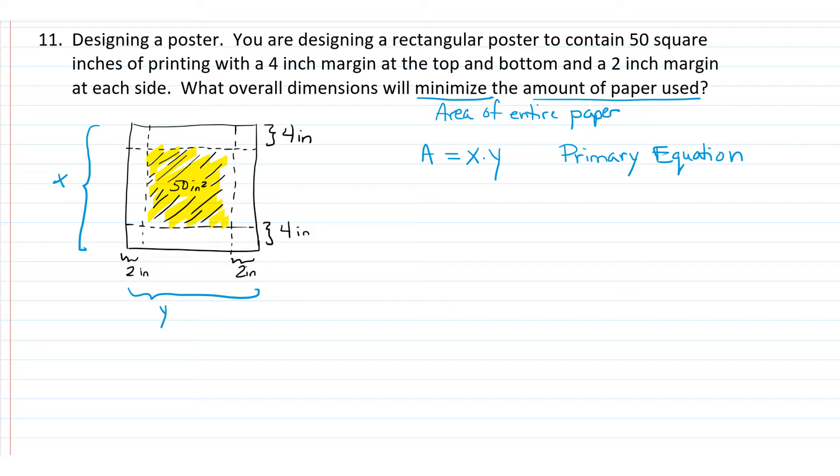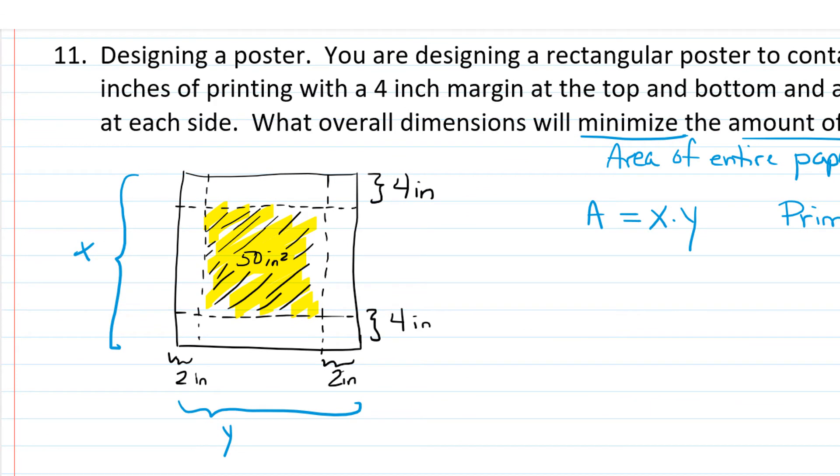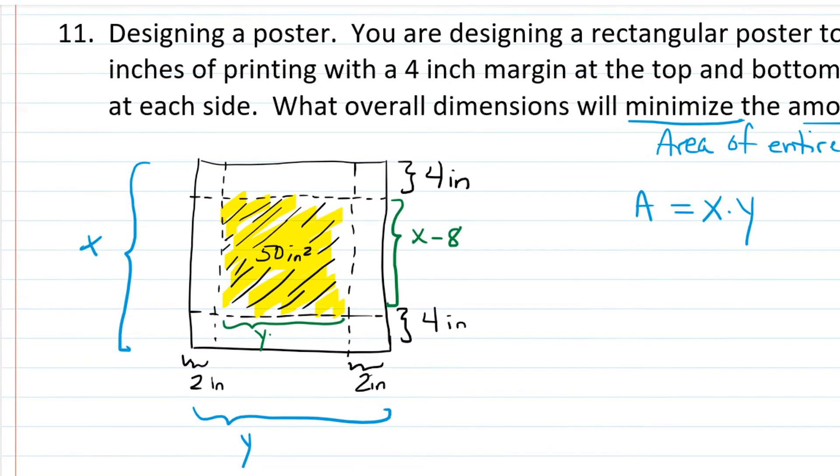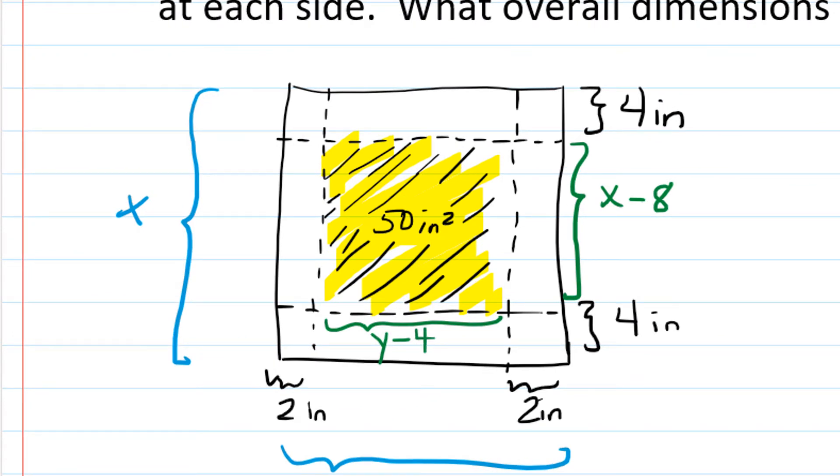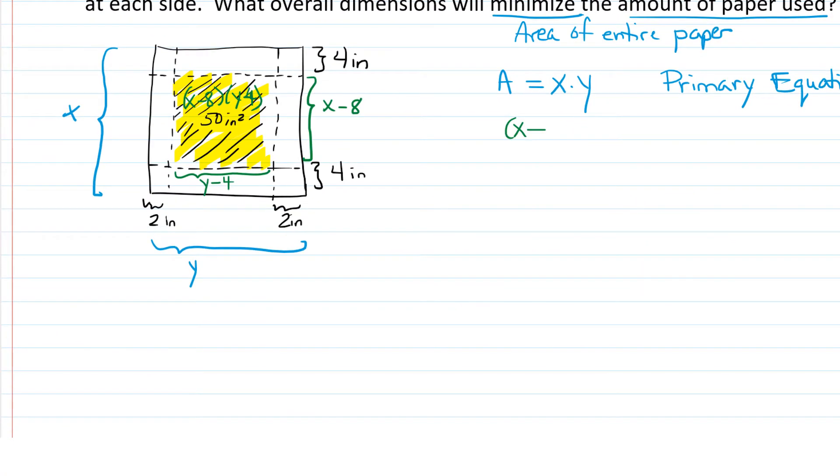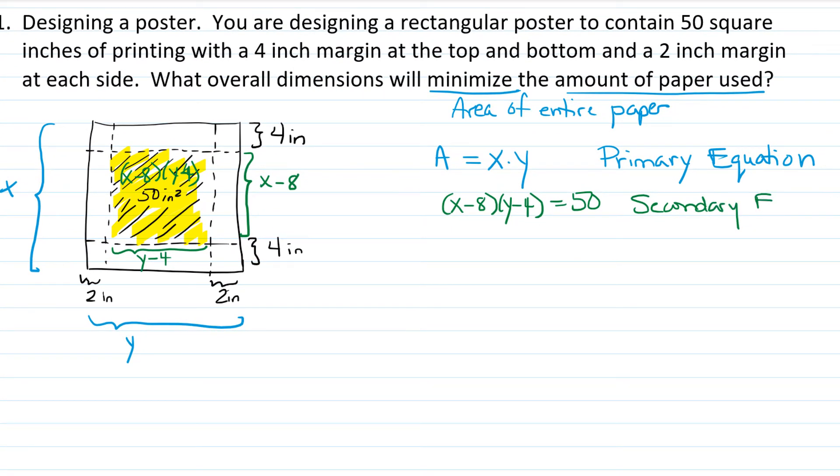Notice that we can actually write the area of this portion in terms of X and Y, because this dimension would be X minus 8, and this dimension is going to be Y minus 4. In fact, the area on the inside part is the same as X minus 8 times Y minus 4. So X minus 8 times Y minus 4, the area in yellow, is equal to 50. This gives us a secondary equation which has a relationship between X and Y. The reason why that's important is because if we can rewrite one of these variables in terms of the other, we can get a function of one variable.